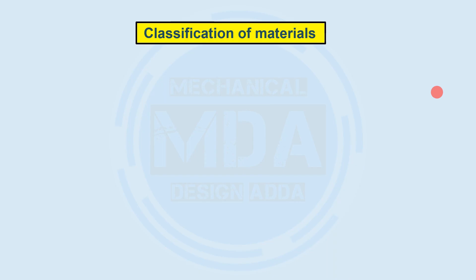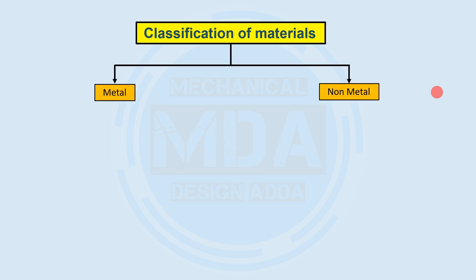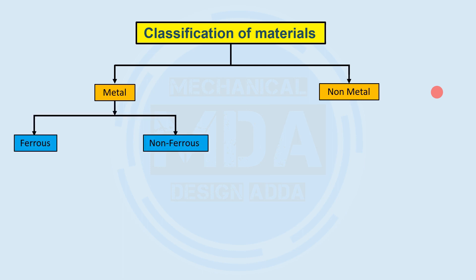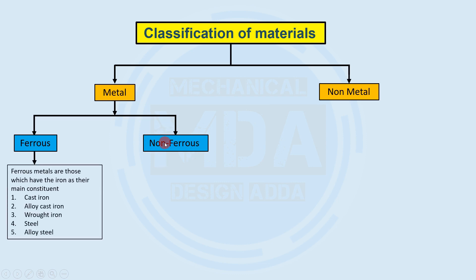So let's discuss the classification of materials. Generally, materials are classified into two categories: metal and non-metal. In the metal category, it is further classified into ferrous and non-ferrous materials.